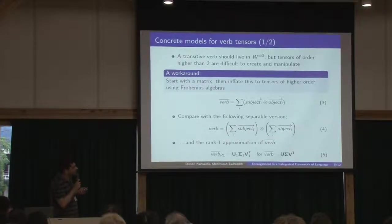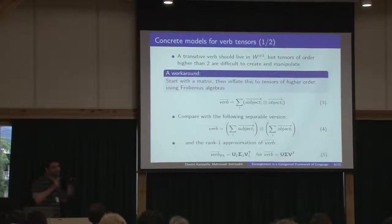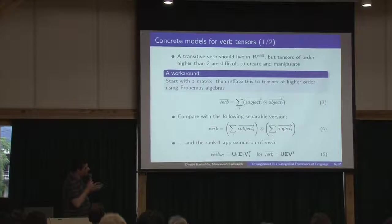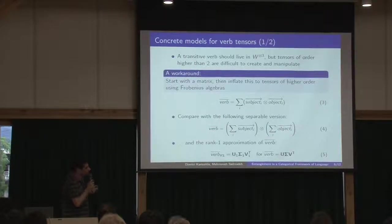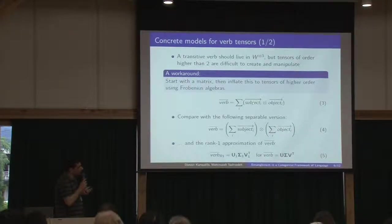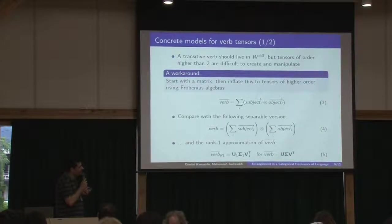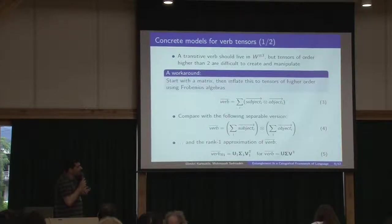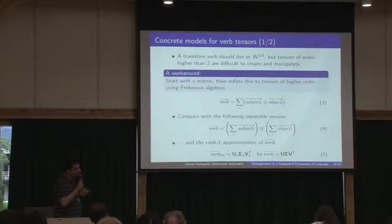One way was to start from a matrix. We don't create a cube but a matrix. By taking the context of the verb for each occurrence of the verb in the corpus, we take the subject and the object, we tensor these two things, and then we sum everything, and then we create a verb matrix that represents the meaning of this verb. Later we will see how to use Frobenius algebras in order to expand these to tensors of higher order.